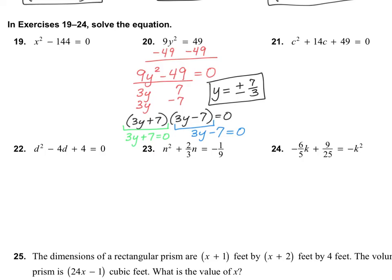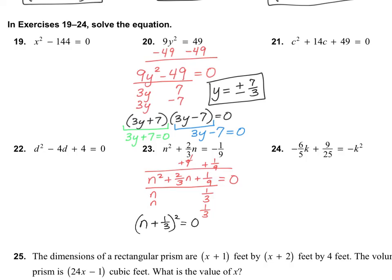Let's take a look at number 23. I see that not everything is on one side, so first add 1/9 to both sides. That gives n squared plus 2/3 n plus 1/9 equals zero. I notice n squared is n times n, and 1/9 is a perfect square because it is 1/3 multiplied by 1/3. Cross-multiplying gives 1/3 n and 1/3 n, which does equal 2/3 n. Since they're both exactly the same going across, we can simplify: n plus 1/3, all quantity squared, equals zero. That means we have a repeated zero, so n plus 1/3 equals zero, and n equals negative 1/3.